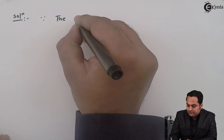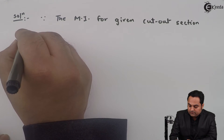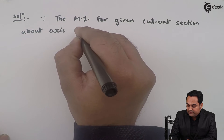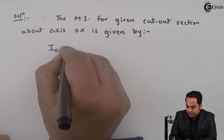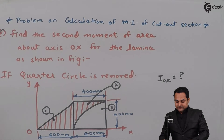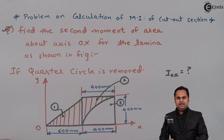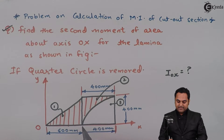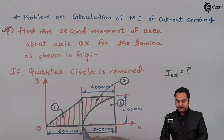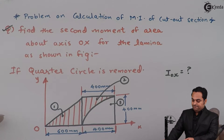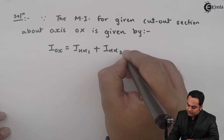Since the MI for the given cutout section about axis OX is to be found, IOX is the horizontal axis. We calculate the MI for all three sections about the horizontal axis. We add the moment of inertia for the triangle and square, and subtract the moment of inertia of the quarter circle: IOX = Ixx1 + Ixx2 − Ixx3. This is equation number one.